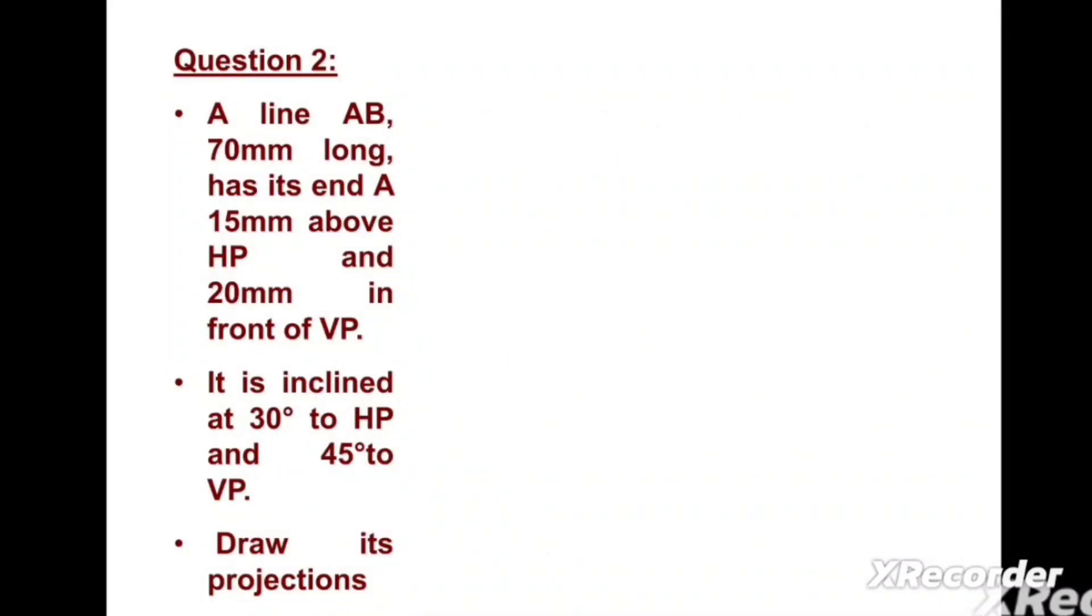Hello everyone, we are going to discuss question number 2 of the chapter Projection of Line, subject Engineering Graphics. In the problem statement, it is written that a line AB, 70mm long, has its end A 15mm above the horizontal plane.